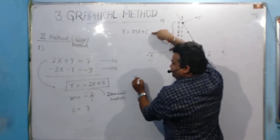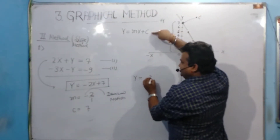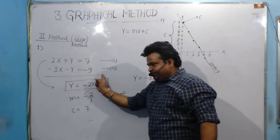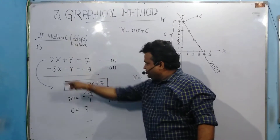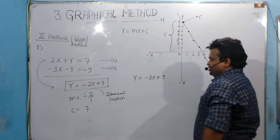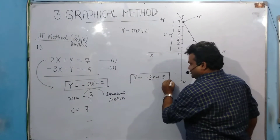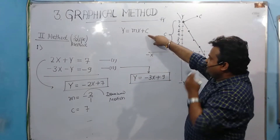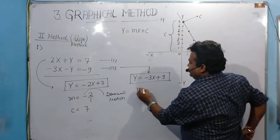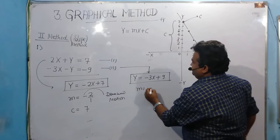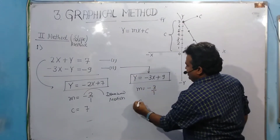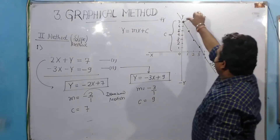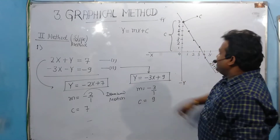Converting the second equation, I get y = -3x + 9. This is my second equation. Comparing with y = mx + c, I get m = -3/1 and c = 9.